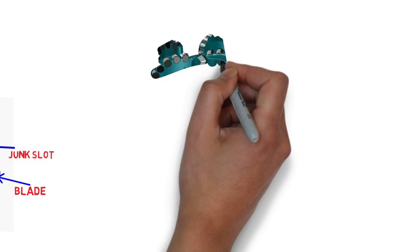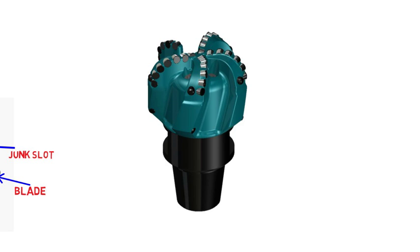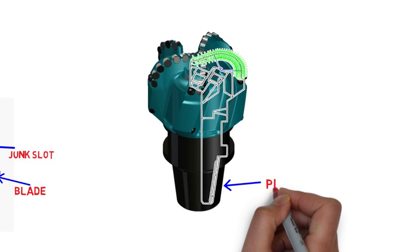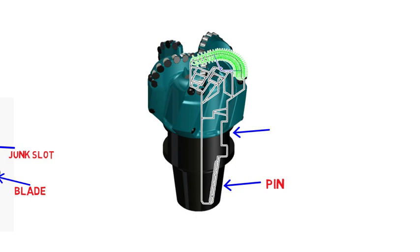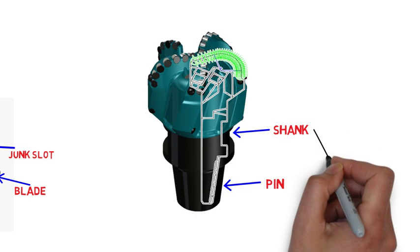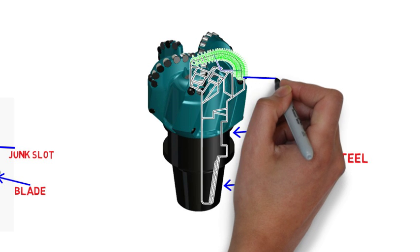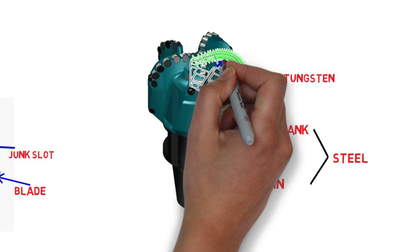The blades are part of the bit body, which connects the cutting structure to the drill string. PDC bit bodies are all made of steel at the pinned connection and transition to a tungsten carbide composite material on the outer surfaces. The bit bodies are referred to as matrix or steel depending on how they are manufactured and how much tungsten carbide is used.